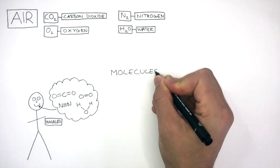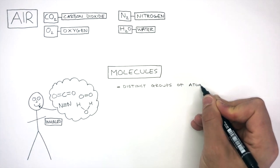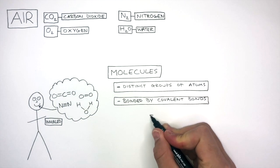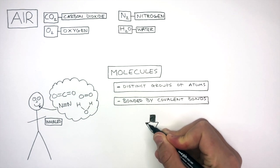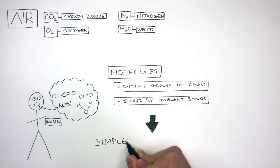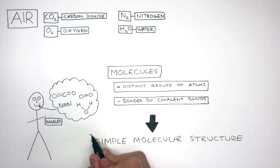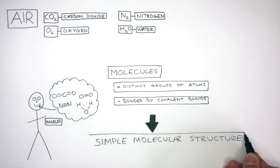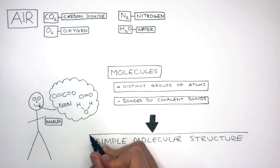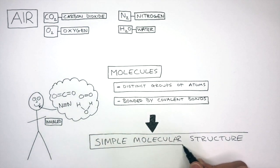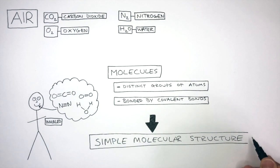Molecules are distinct groups of atoms bonded by covalent bonds. To describe the structure of molecules, we say they have a simple molecular structure. So if you ever get asked what is the structure of a molecule — such as water, chlorine, or hydrogen chloride — you need to say they have a simple molecular structure.